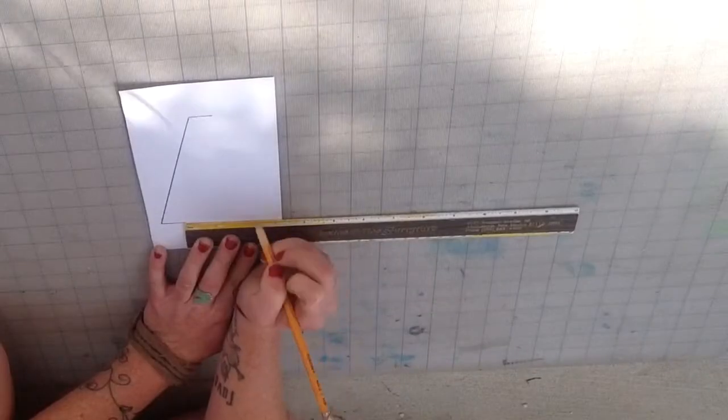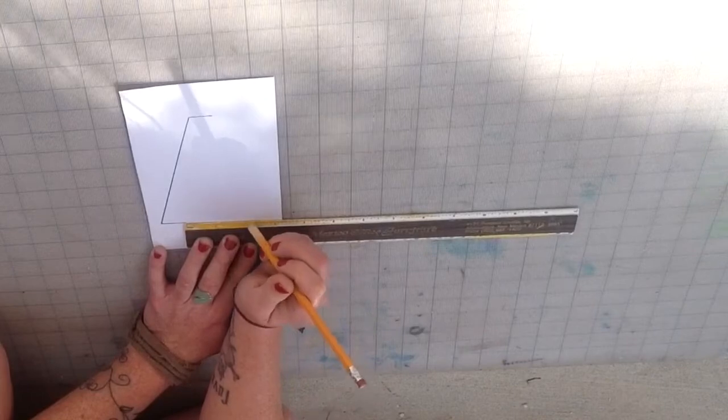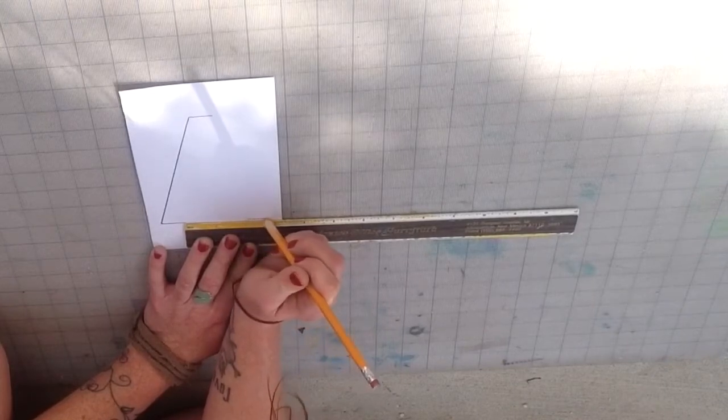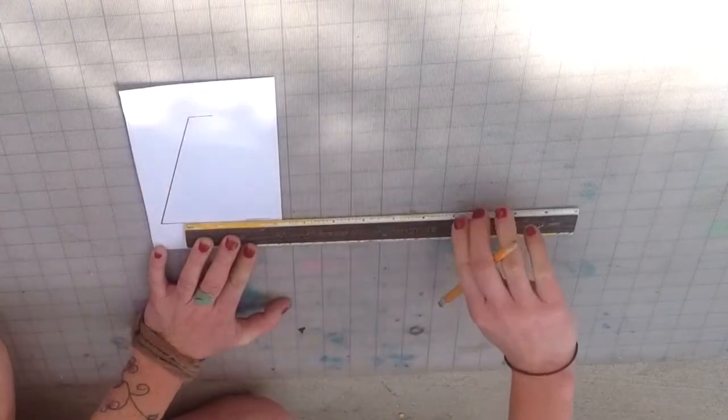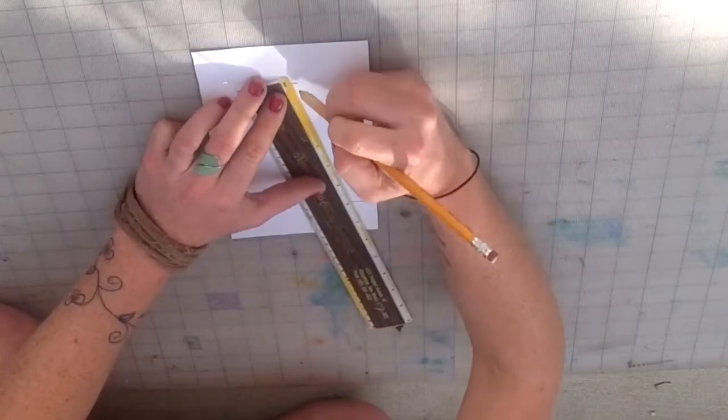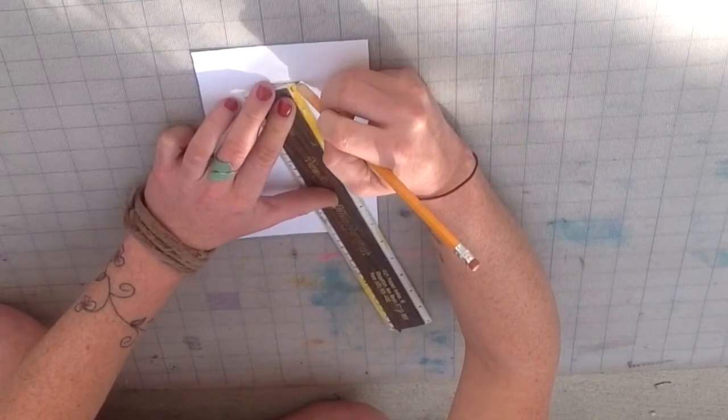From that point leave a 2 inch gap and begin making your other leg by drawing a 3 quarters of an inch mark. Now connect the corner of the bottom leg to the top.